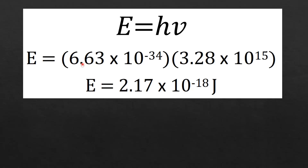Now using E equals h times nu, I input Planck's constant (6.63 × 10⁻³⁴ J·s) and the calculated frequency (3.28 × 10¹⁵ s⁻¹), giving an energy of 2.17 × 10⁻¹⁸ joules. This is the energy required to remove one electron from the attraction of the nucleus.